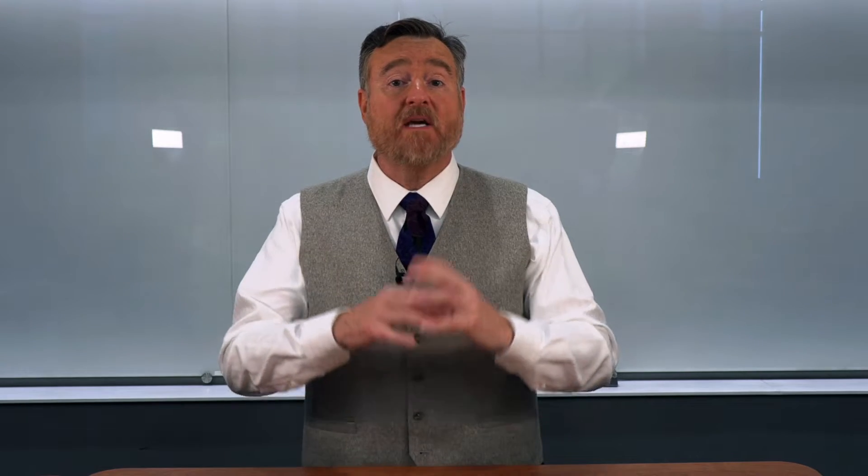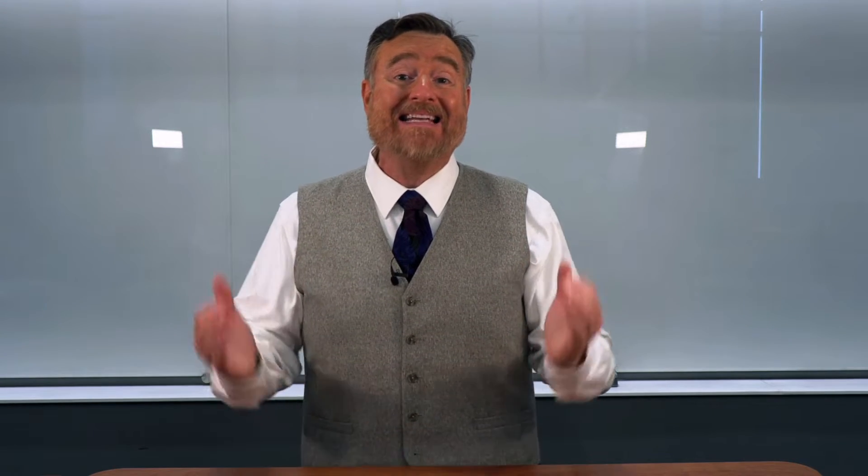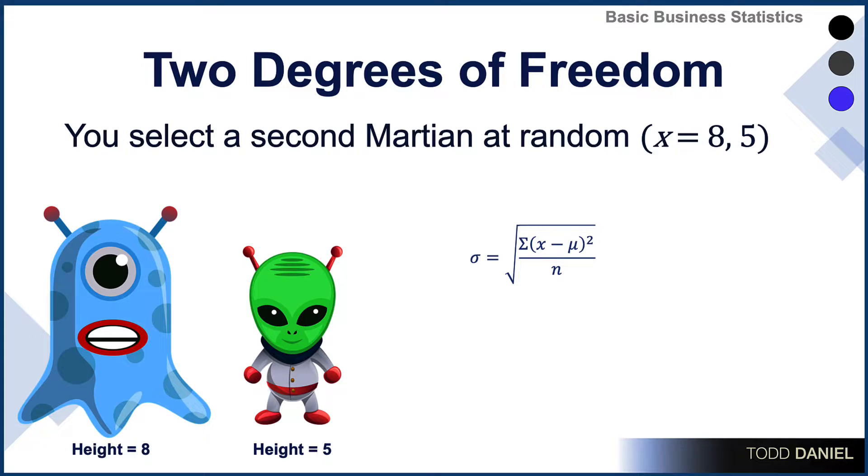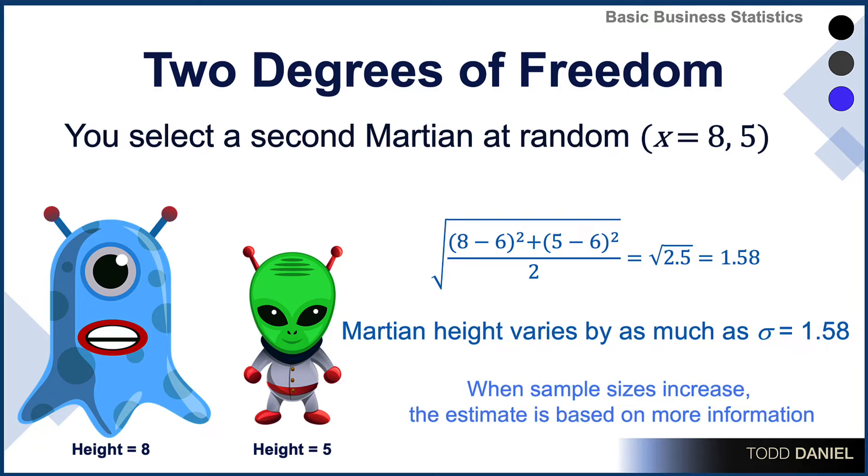But if we increase our sample size, we can decrease our average error estimate. By selecting a second Martian whose height is five, we can again calculate the average error, and we now know that the average error is as much as 1.58. This math is possible because we know the population mean.